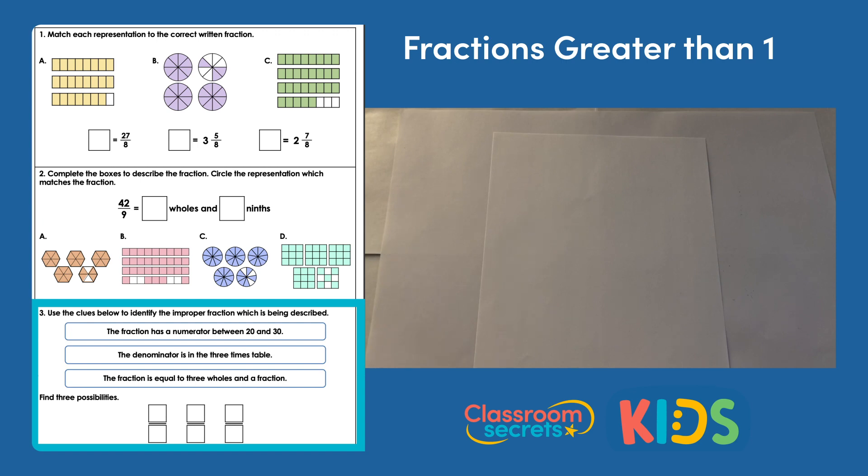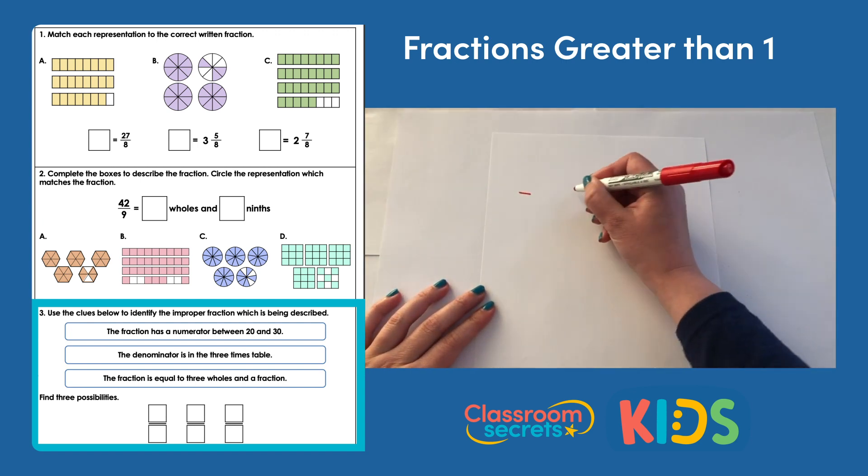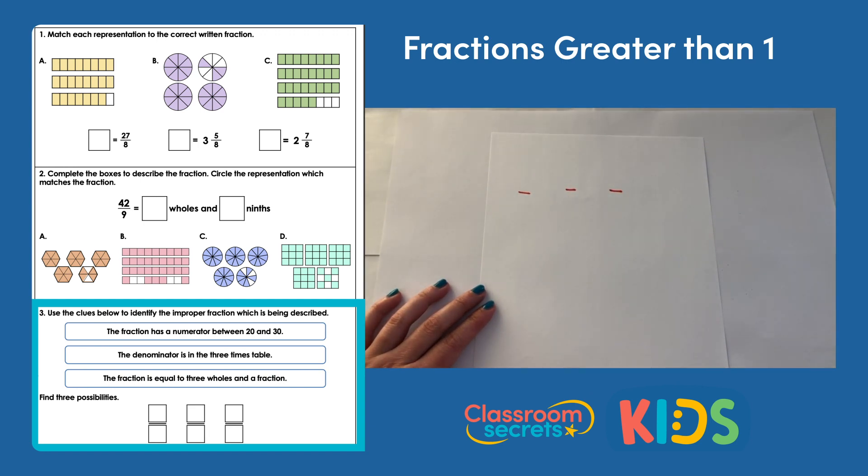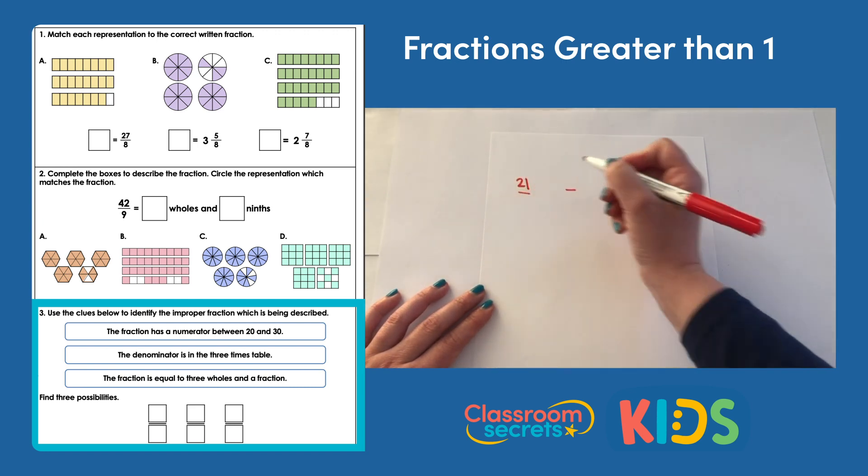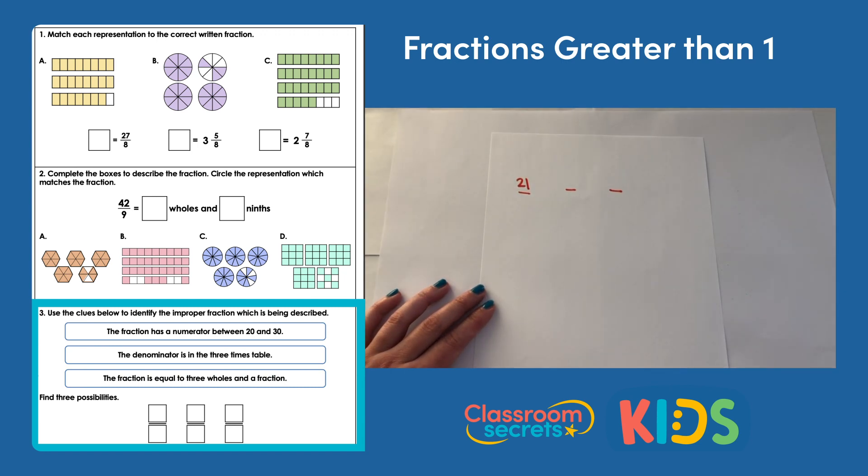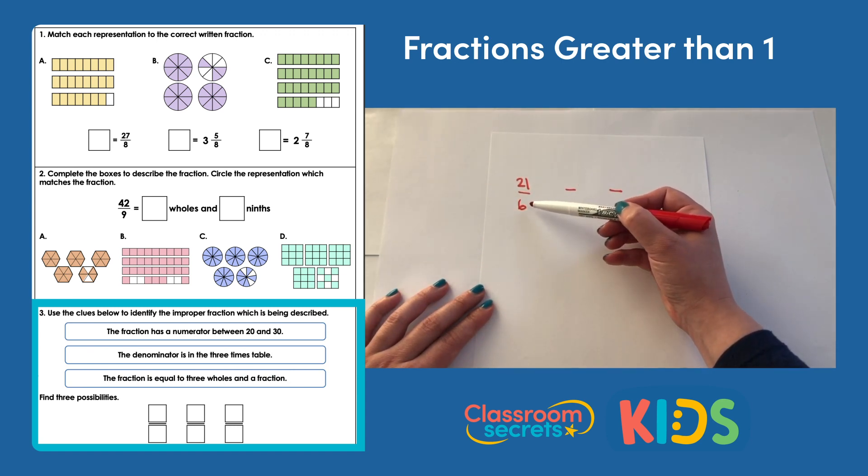So we need to think carefully about the denominator being in the three times table, so we're looking at multiples of three. I'll just get my three fractions ready because we're going to find three possibilities. My numerator then needs to be between 20 and 30, so I could start there by picking a number. I'm going to go for 21. The denominator is in the three times table, so it could be three, six, nine, etc. And the fraction is equal to three wholes and a fraction. So if I wanted to use sixths, I could think about what three wholes would be as sixths. So three times six is 18, so that would be 18 sixths equivalent to three wholes. So 21 would actually work because 21 sixths is the equivalent of three wholes and three sixths. So that could be an option.